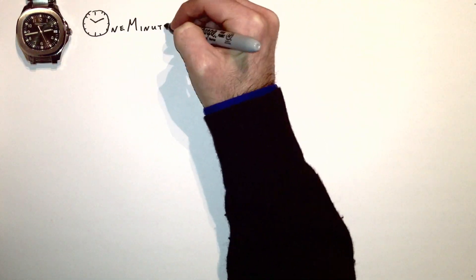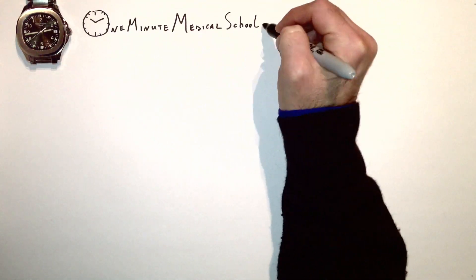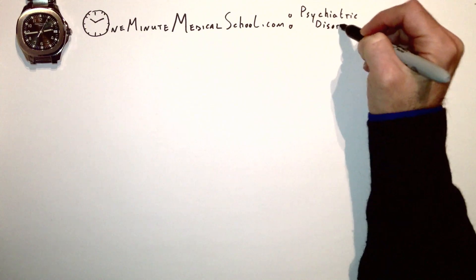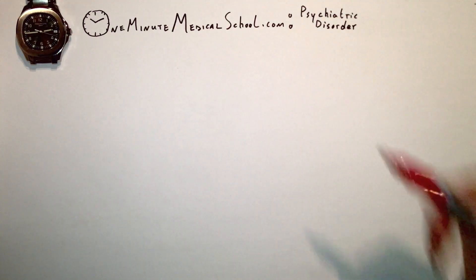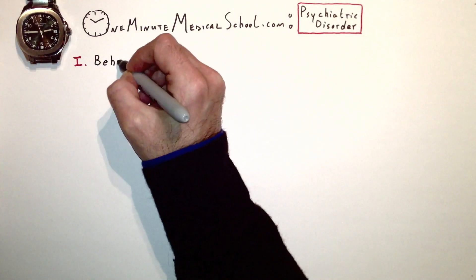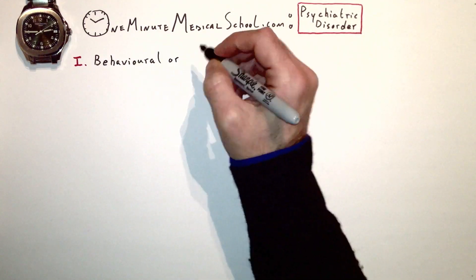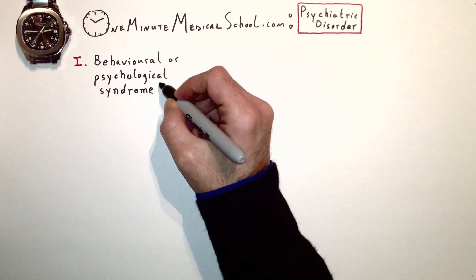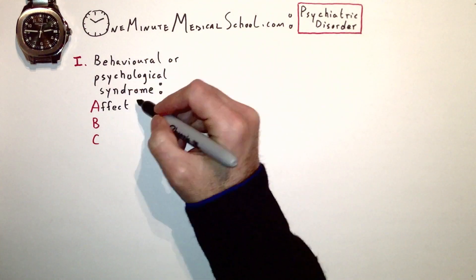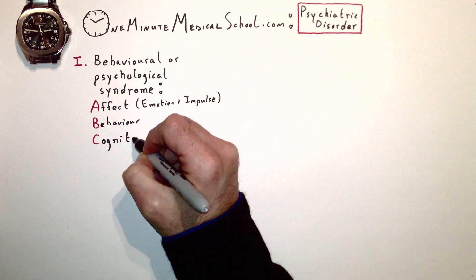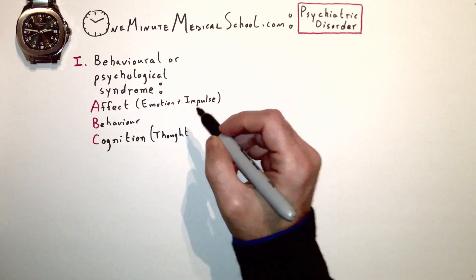Have you ever wondered how we define psychiatric disorder? One Minute Medical School explains. First of all, it involves a behavioral or psychological syndrome. This involves the domains of affect, behavior, and cognition.